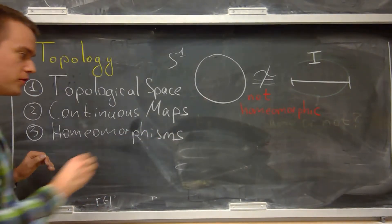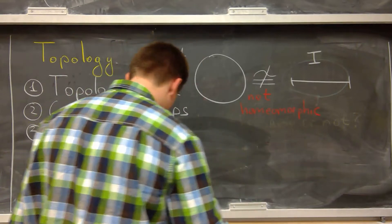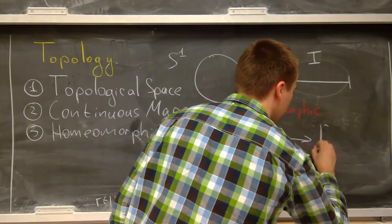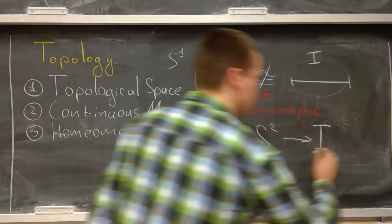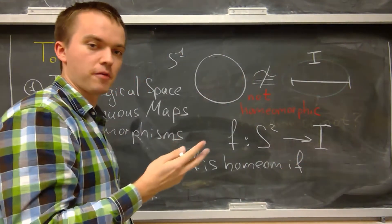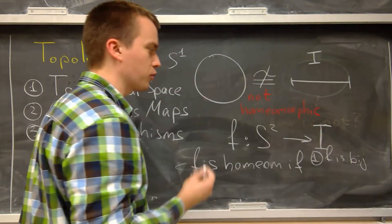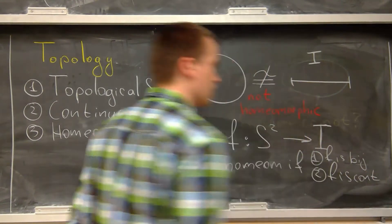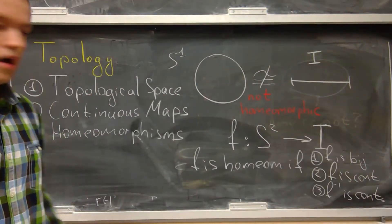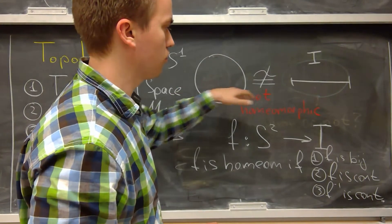When we say two spaces are not homeomorphic, in topology terms this means: if we have a map f from S¹ to the interval I, then f is a homeomorphism if it satisfies three properties — first, f is bijective; second, f is continuous; and third, the inverse of f is also continuous.